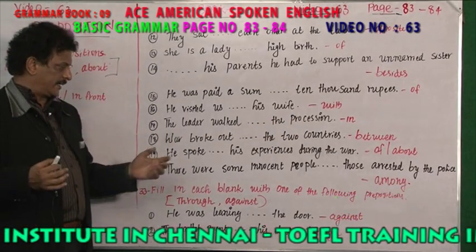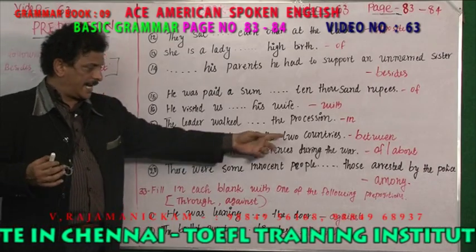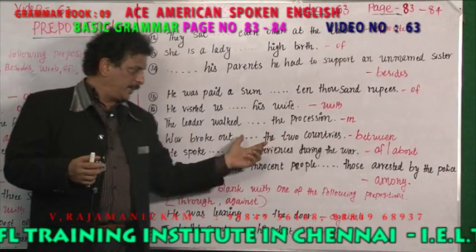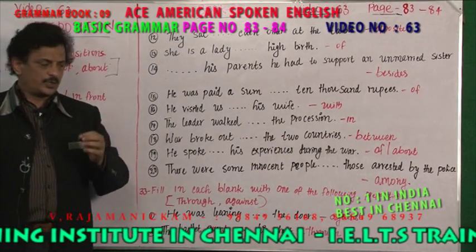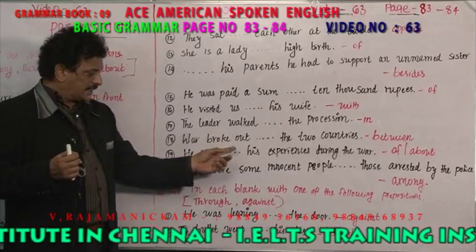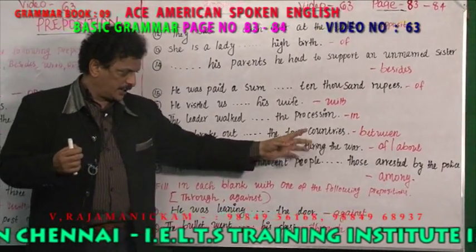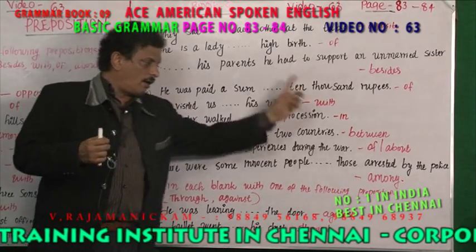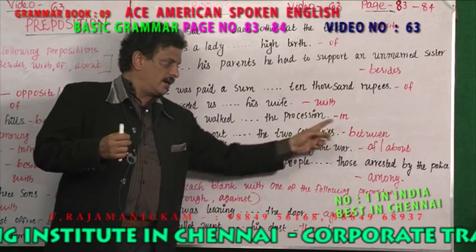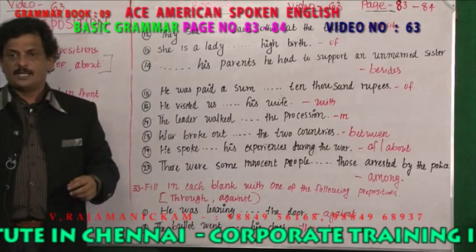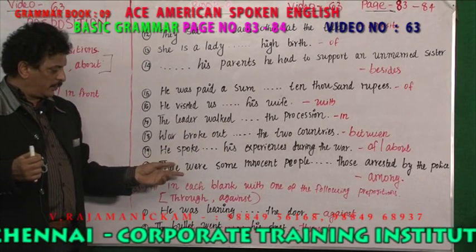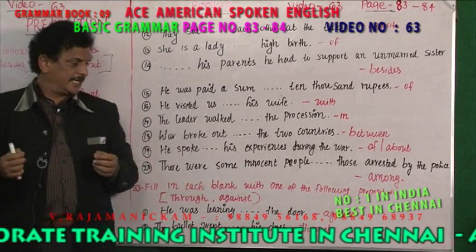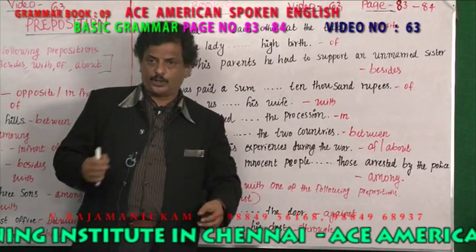'War broke out dash the two countries' — between the two countries. 'He spoke dash his experiences during the war' — he spoke of his experiences, or about his experiences. 'There were some innocent people among those arrested by the police' — among is used here because there are more than two people.